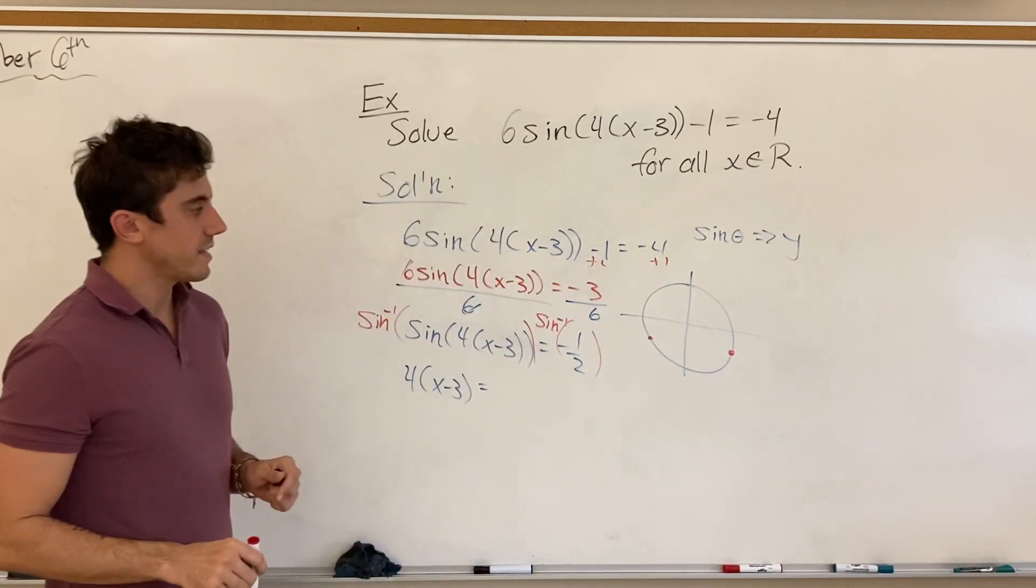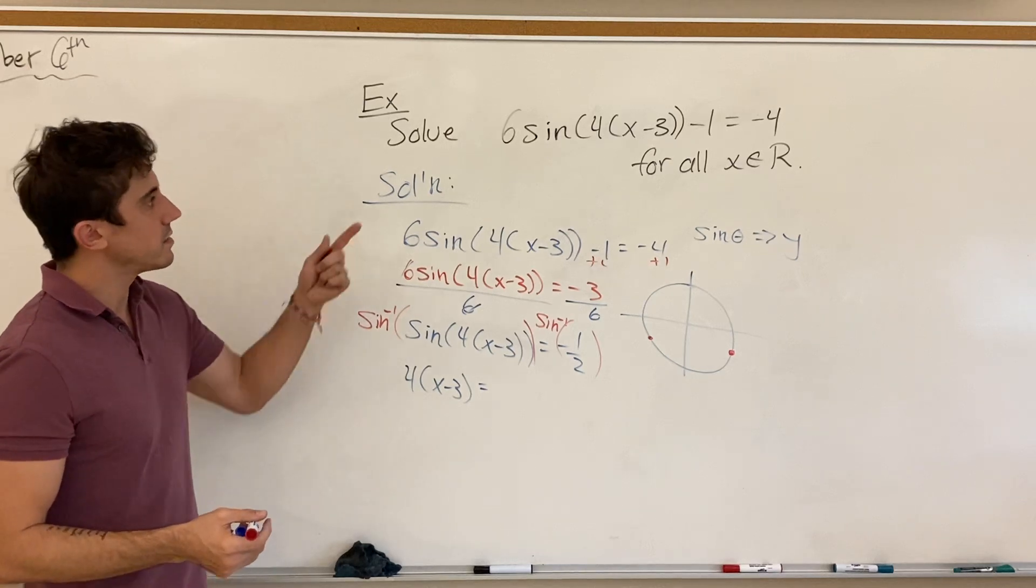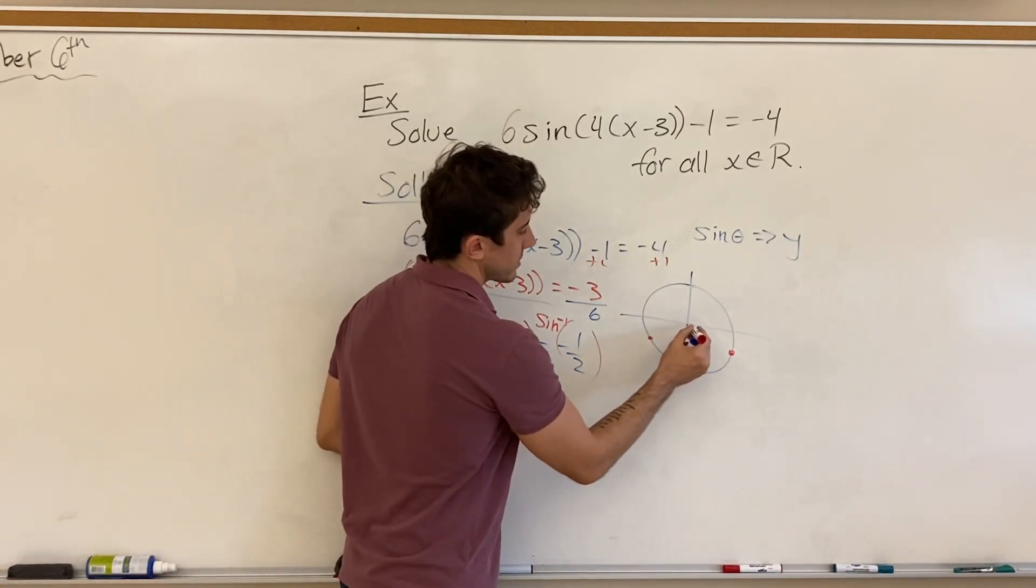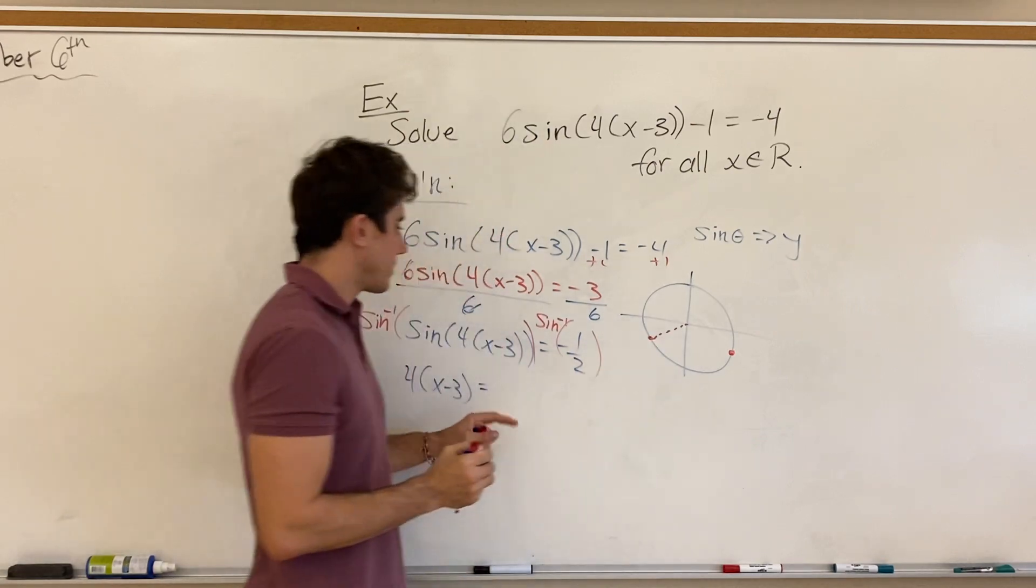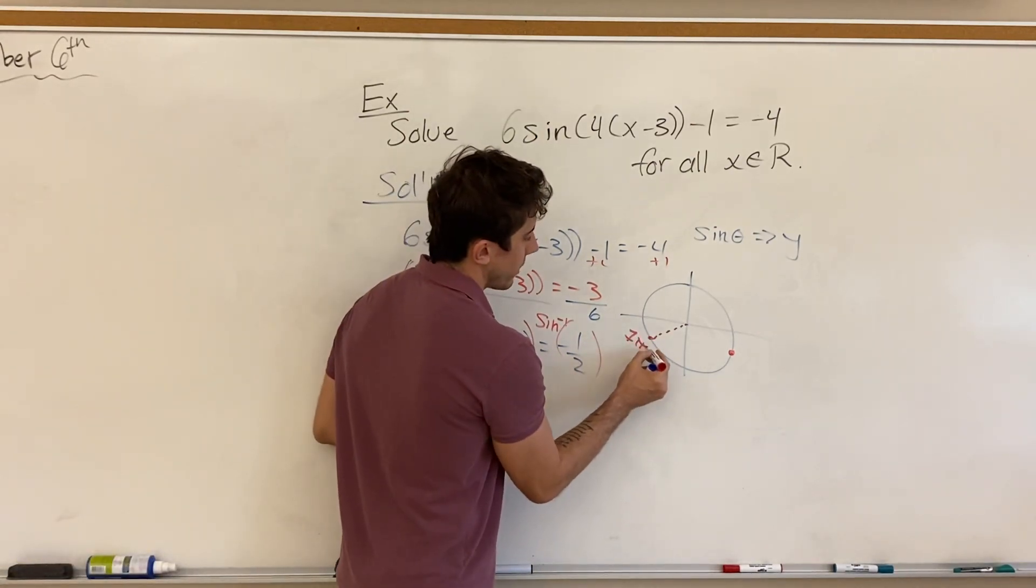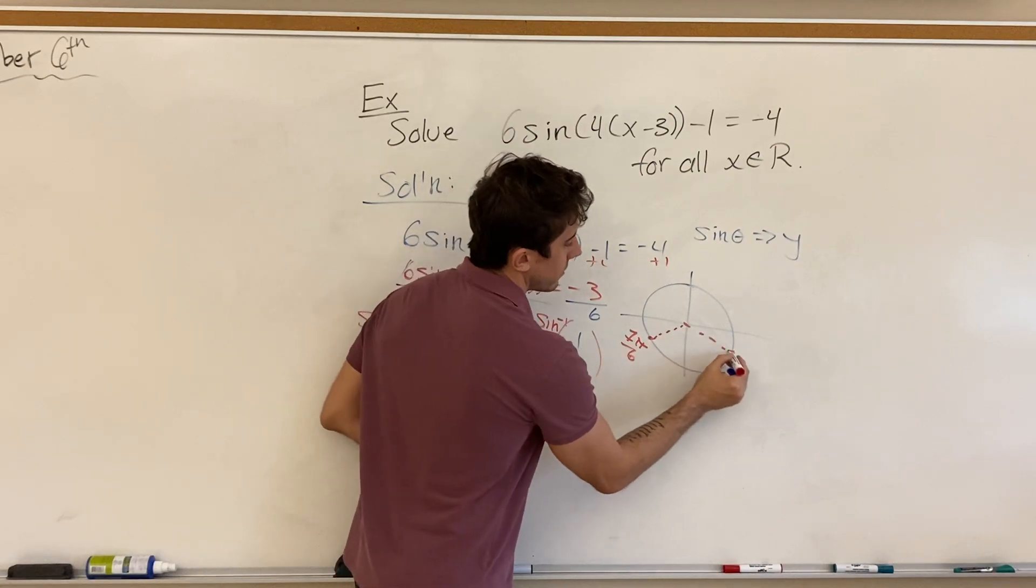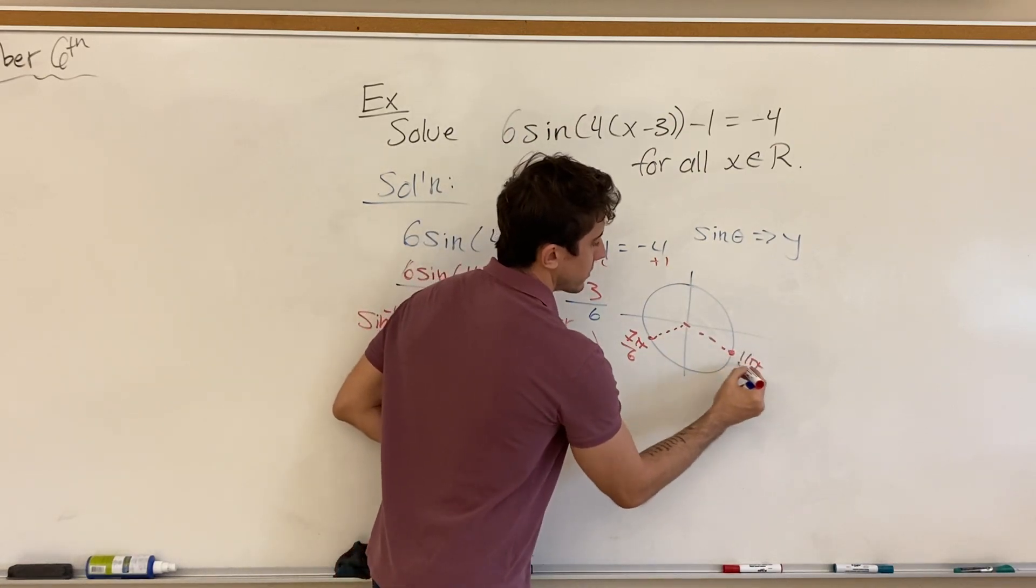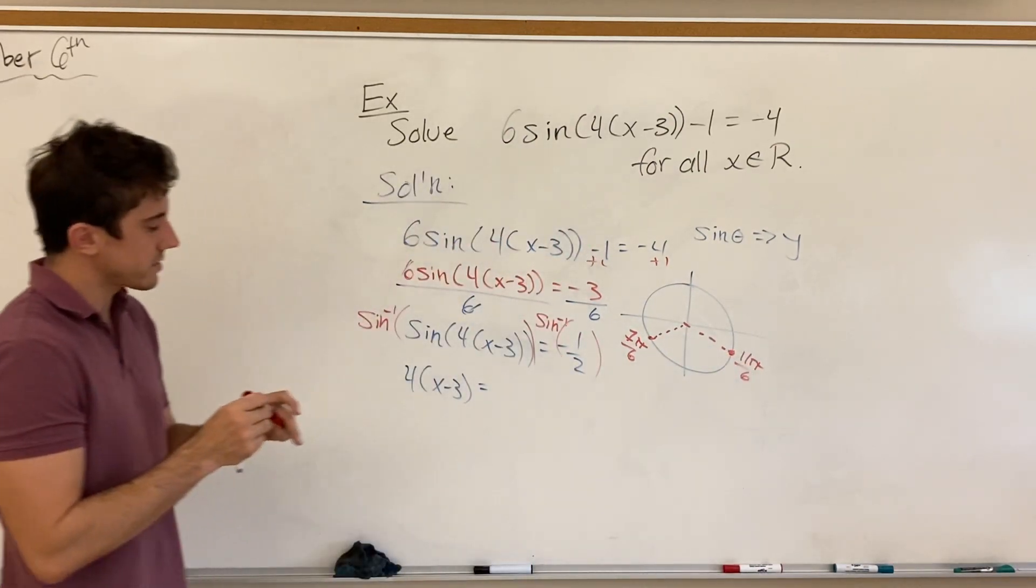Now, we can do this in degrees or radians, since the domain isn't really specified. Let's use radians, just for practice. And so if you know the inverse sine of negative 1 half, you'll know that this is at 7 pi over 6, and that this value falls on 11 pi over 6.